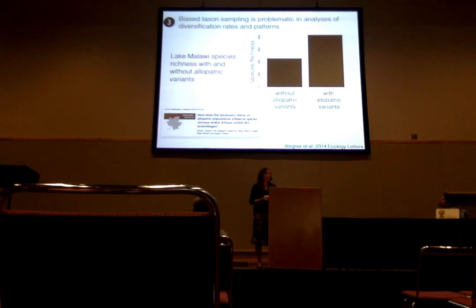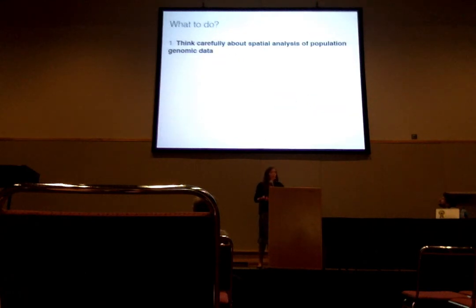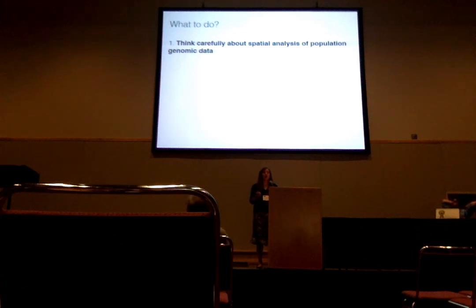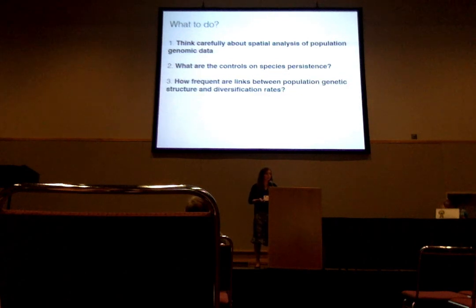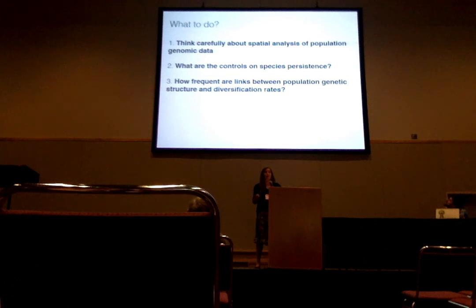So what do we need to do? First, we need to think very carefully about spatial analysis of population genomic data, because with tremendous power comes ample opportunity to do way too much splitting. Second, we need to think carefully about the controls on species persistence, a neglected subject in speciation research. Finally, we need to think more clearly about links between population genetic structure and diversification rates — what evidence we have for these links, and in what taxa we have evidence for them and in what taxa we don't.